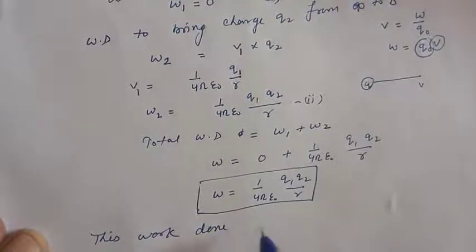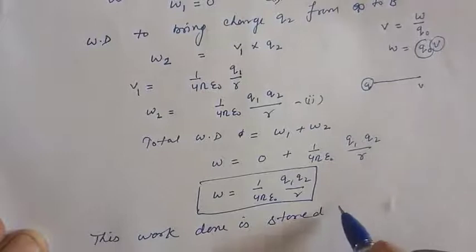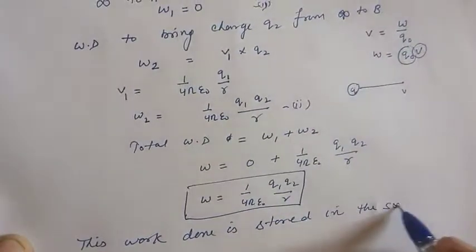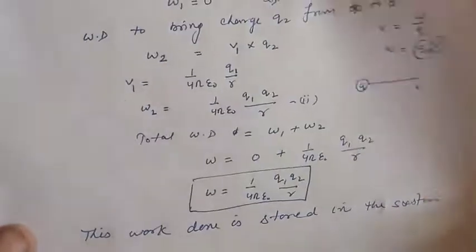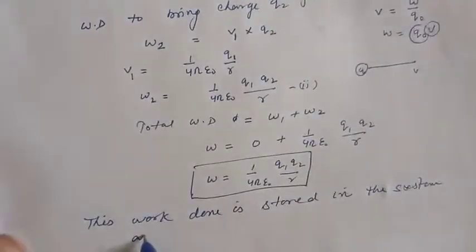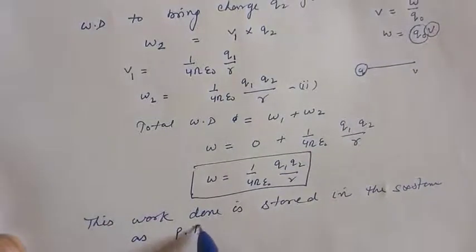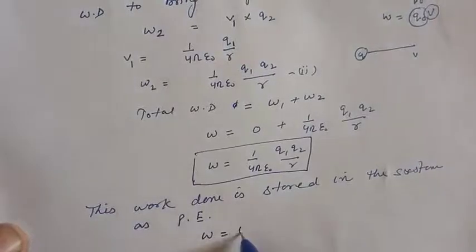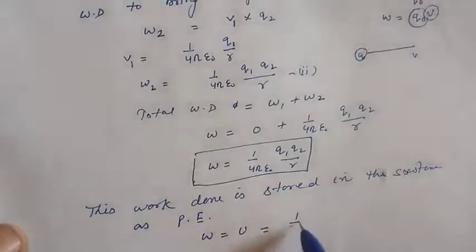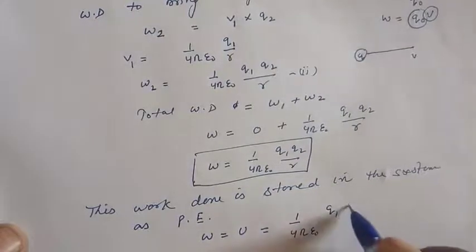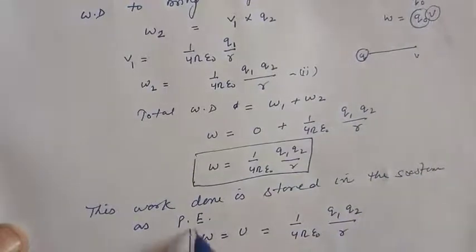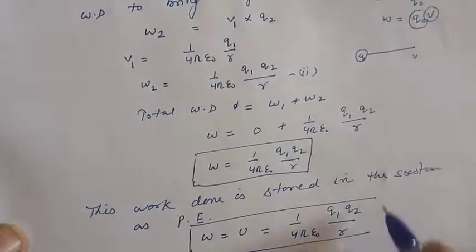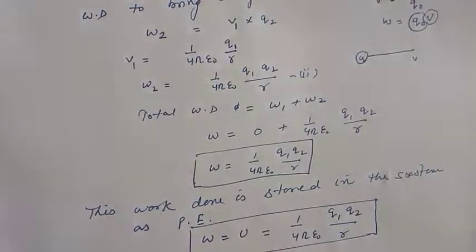So this work done to bring the charges from infinity to the given points in electric field is stored as the electric potential energy. This work done is stored in the system as potential energy, PE. PE stands for potential energy. So work equals U, work done equals energy, and that is equal to 1 upon 4 pi epsilon 0 q1 q2 upon r. So this is the final expression for the electric potential energy of two charges.